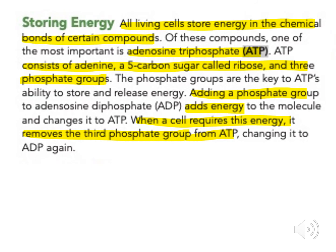All living cells store energy in the chemical bonds of certain compounds. Of these compounds, one of the most important is adenosine triphosphate. ATP consists of adenine, a five-carbon sugar called ribose, and three phosphate groups. The phosphate groups are the key to ATP's ability to store and release energy.